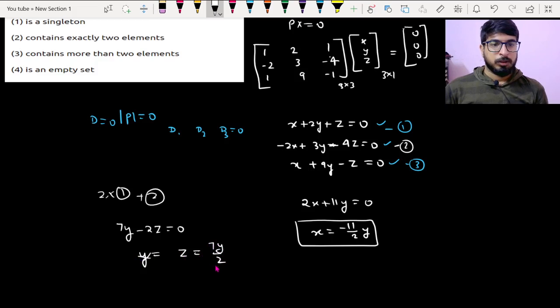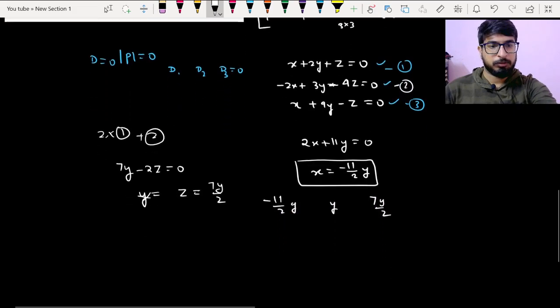So I got y equal to, or I can say z equal to 7 by 2y. So I got x as minus 11 by 2y, y as y, and z as 7 by 2y. Now we know that x squared plus y squared plus z squared is 1.